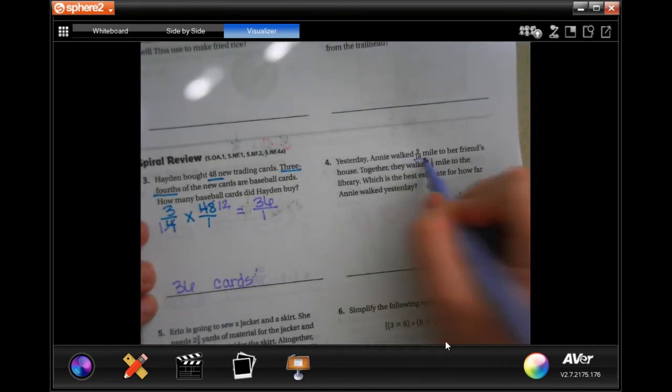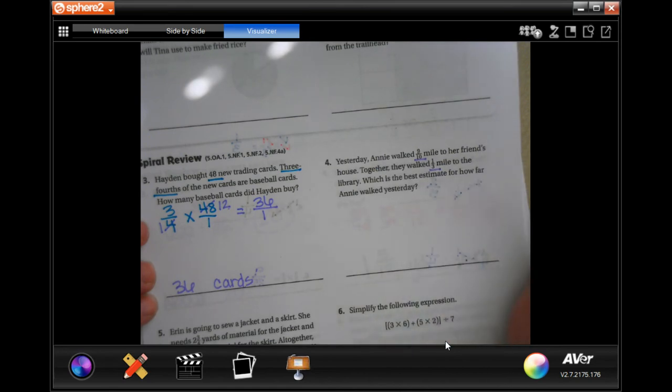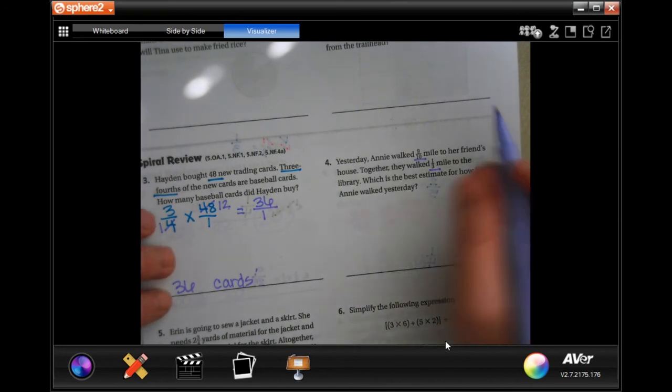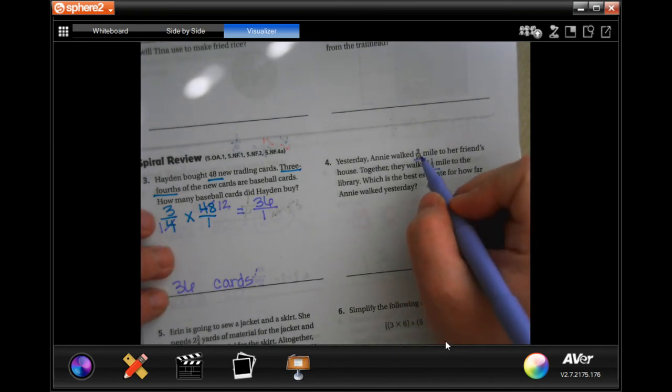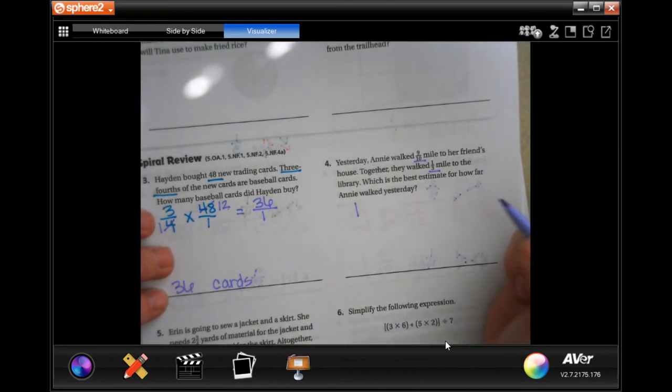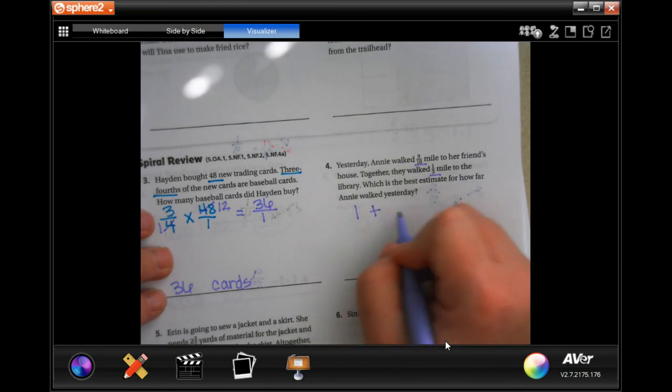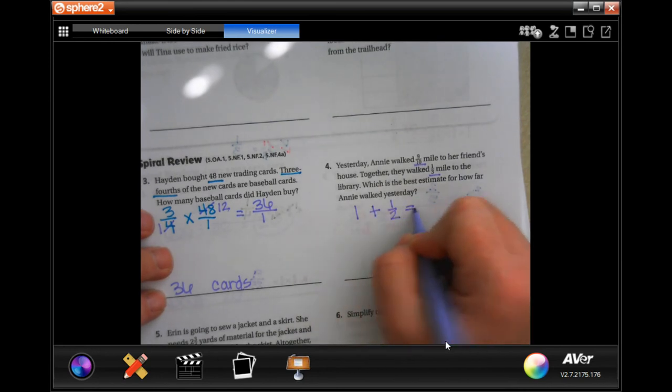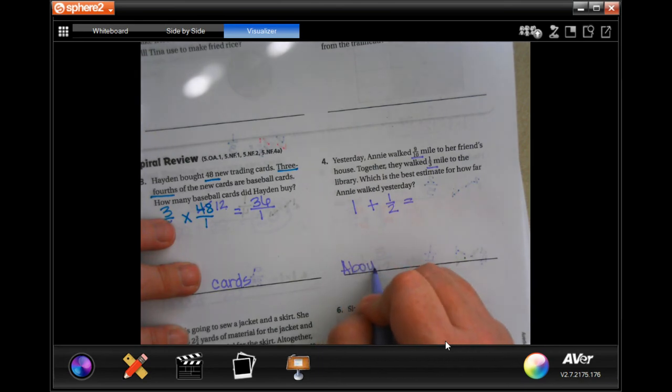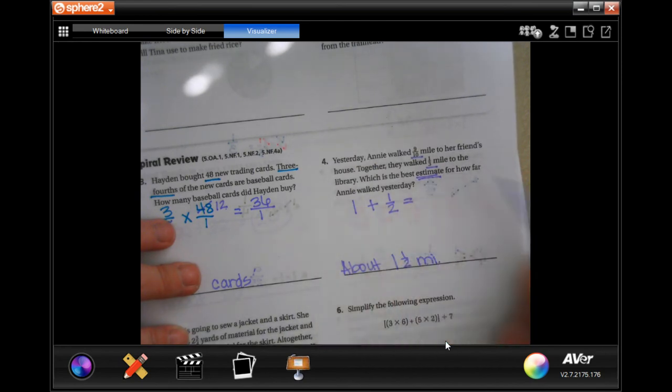Yesterday, Annie walked 9 tenths of a mile to her friend's house. Together, they walked a third of a mile to the library. Which is the best estimate for how far Annie walked yesterday? Well, 9 tenths of a mile is about 1 mile. And 1 third of a mile, let's just call that a half. I would say about 1 and 1 half miles. It was an estimate.